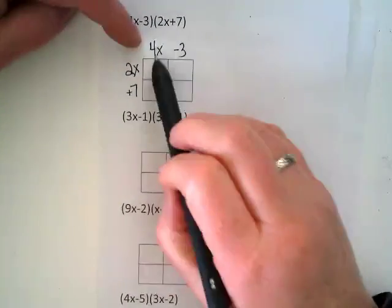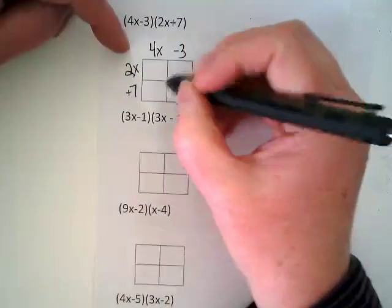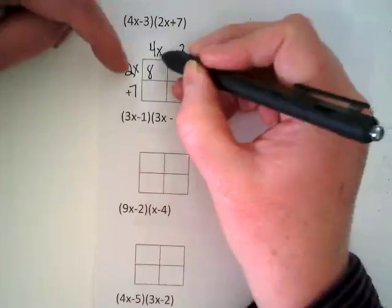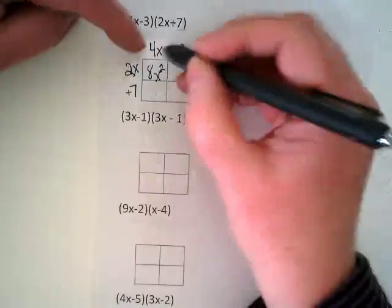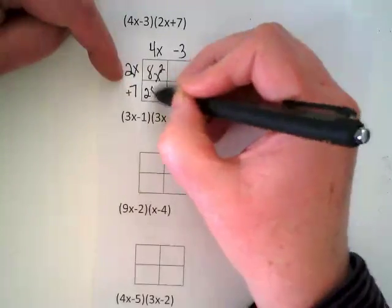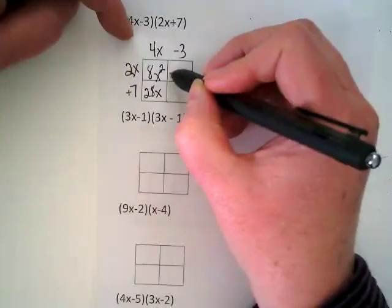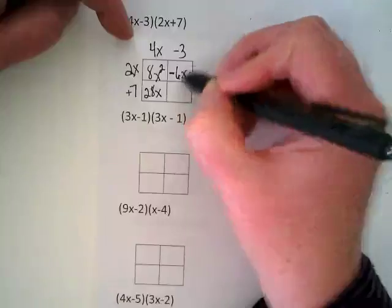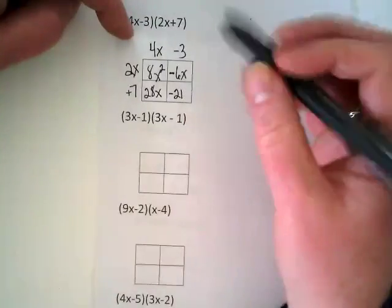What is 4 times 2? And what is X times X? X squared. 4 times 7? 28. And then X. What's this term going to be? Negative 6X. And this will be negative 21.